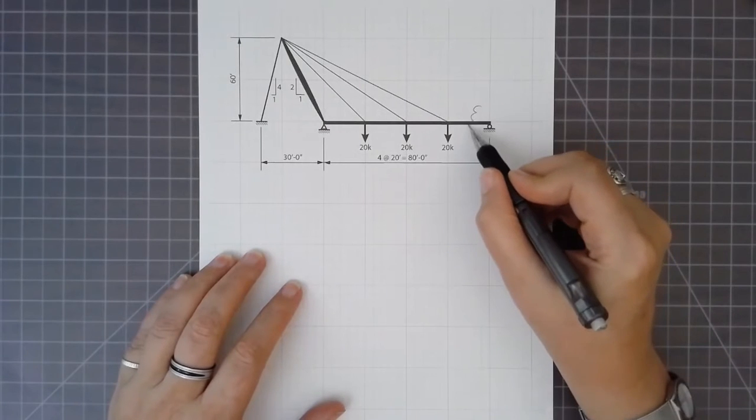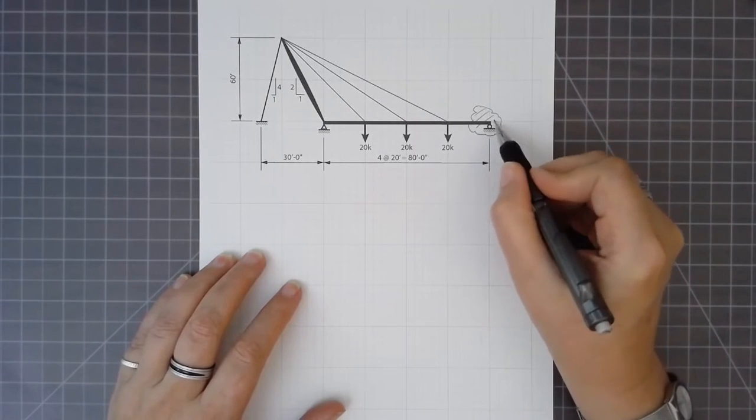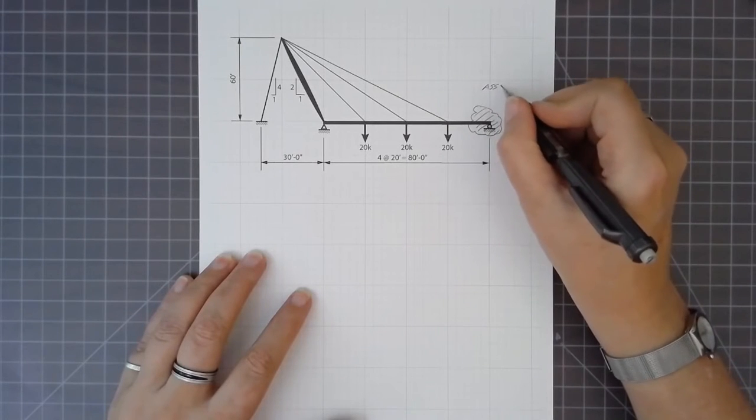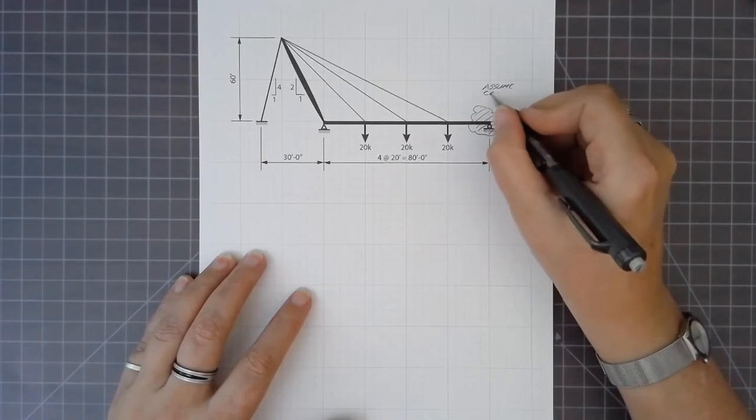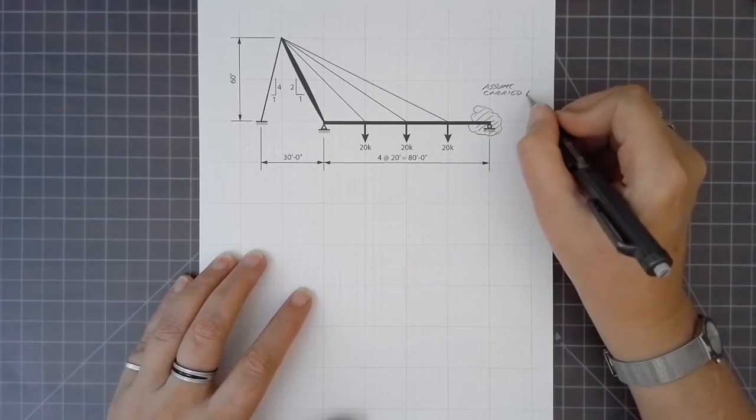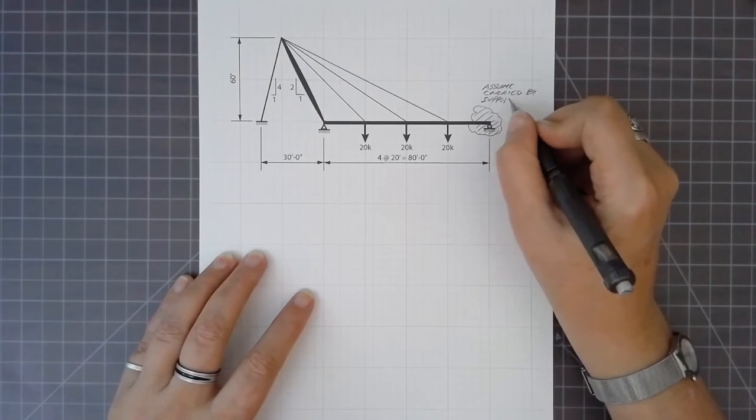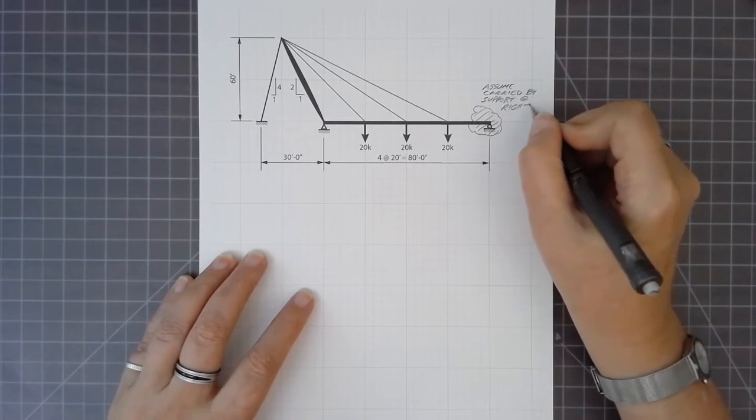All right, so in this problem we have a cable stayed bridge. The right-hand reaction on this we're going to assume is taken care of by support on the right-hand side, so that only the backstay and the support in the middle are actually carrying the weight of the bridge structure.